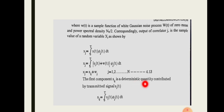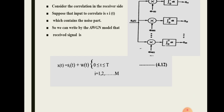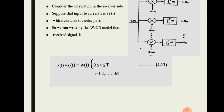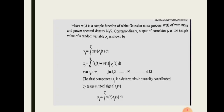The first component, sij, is a deterministic quantity contributed by the transmitted signal si(t). It is the deterministic part of the correlator output — when a signal si(t) is transmitted, sij represents its vector component projected onto the j-th orthonormal basis function.